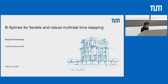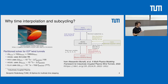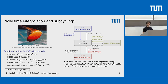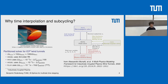Let's start with a small example. There's a nice paper we found recently about a multi-physics modeling framework for inductively coupled plasma wind tunnels. We were wondering for quite a while what a plasma wind tunnel is. You need it for designing heat shields for spacecraft, because in the plasma wind tunnel you have the same conditions as during re-entry, so if you want to develop the material you need something like this.